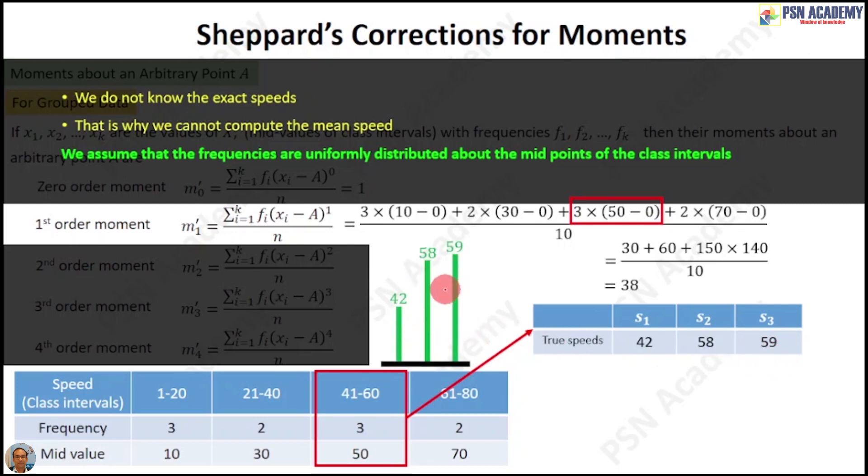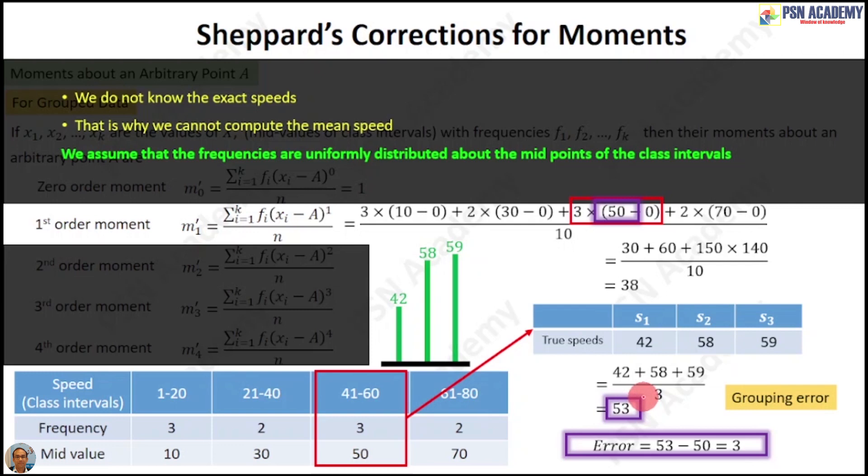Visually, it will look like this, and you can clearly see it is left skewed. Let us compute the mean based on the true speeds, and it comes to 53. Based on our assumption, it was 50 kmph, and based on the true data, it is 53. There is an error of 3 kmph, and this error is called grouping error.